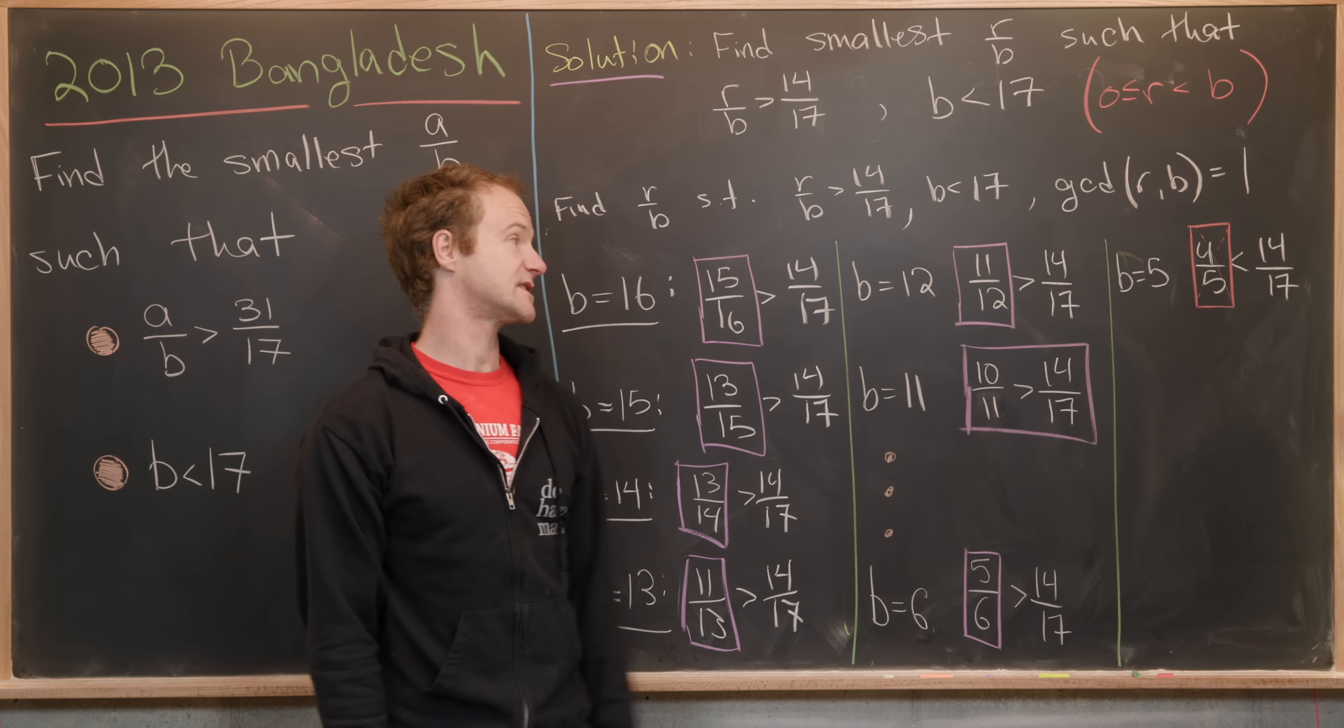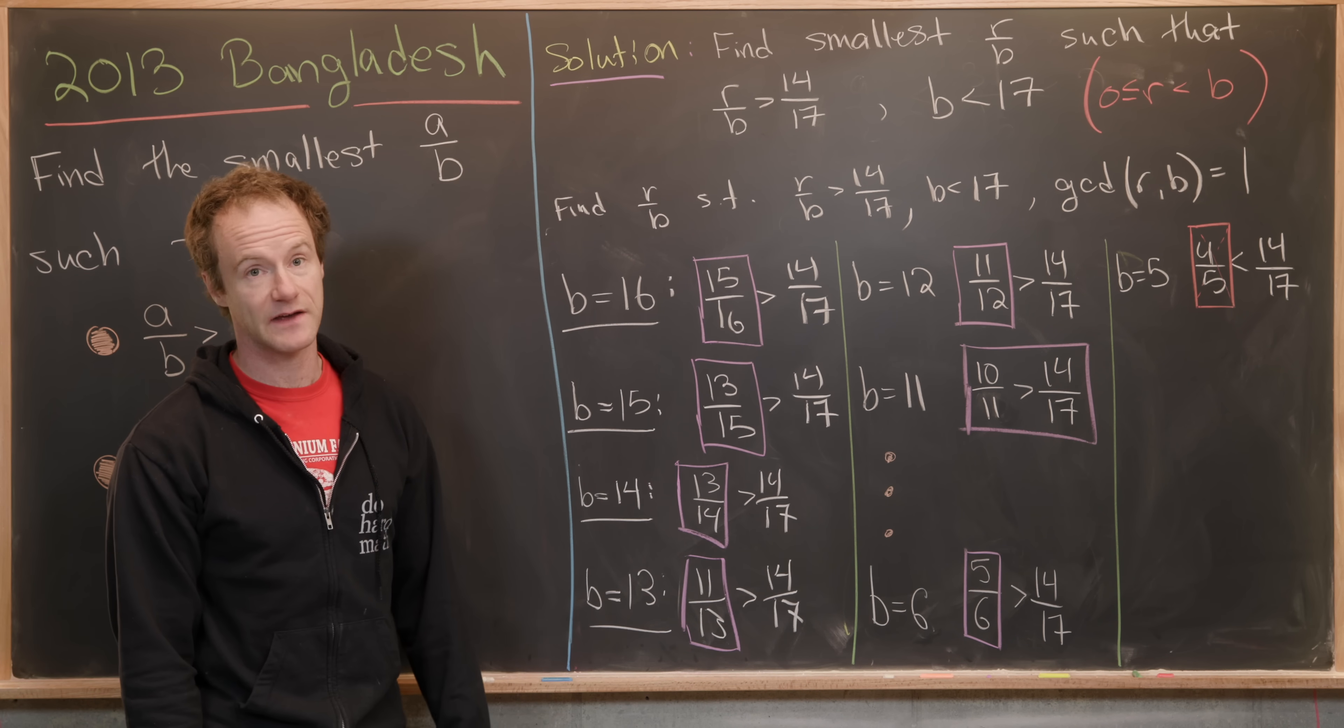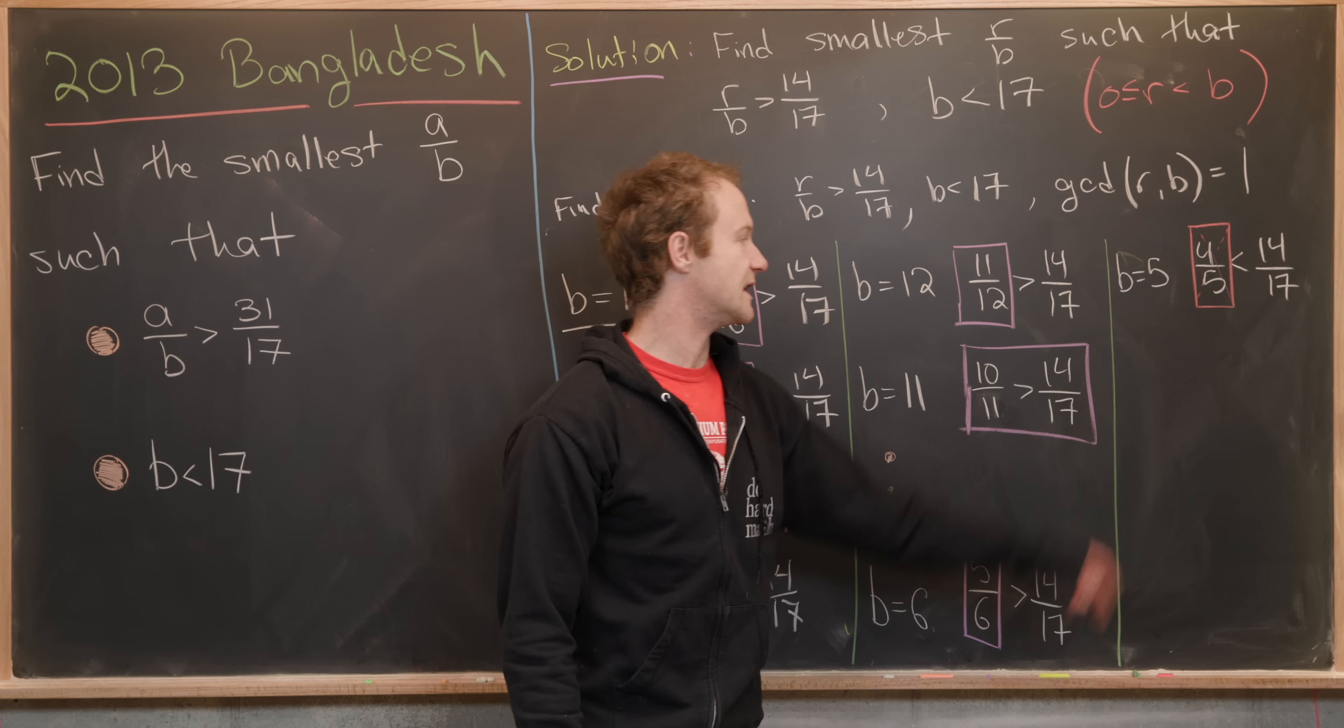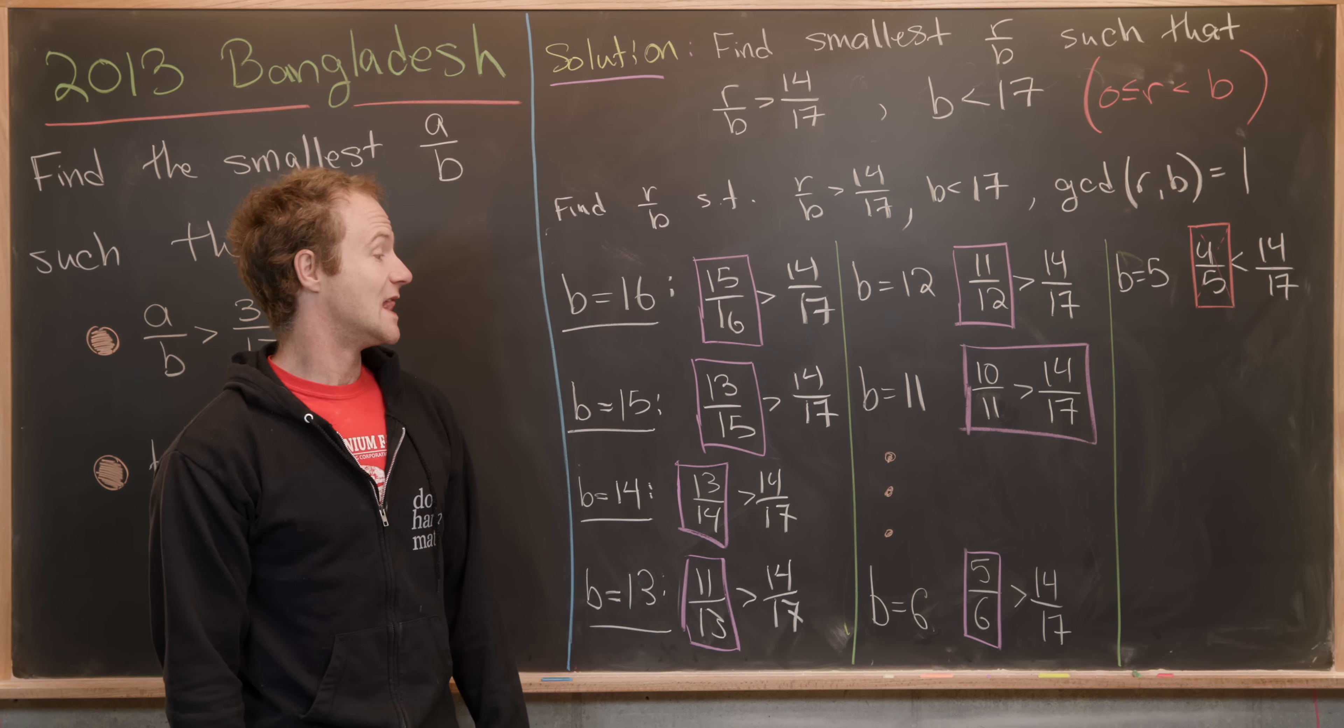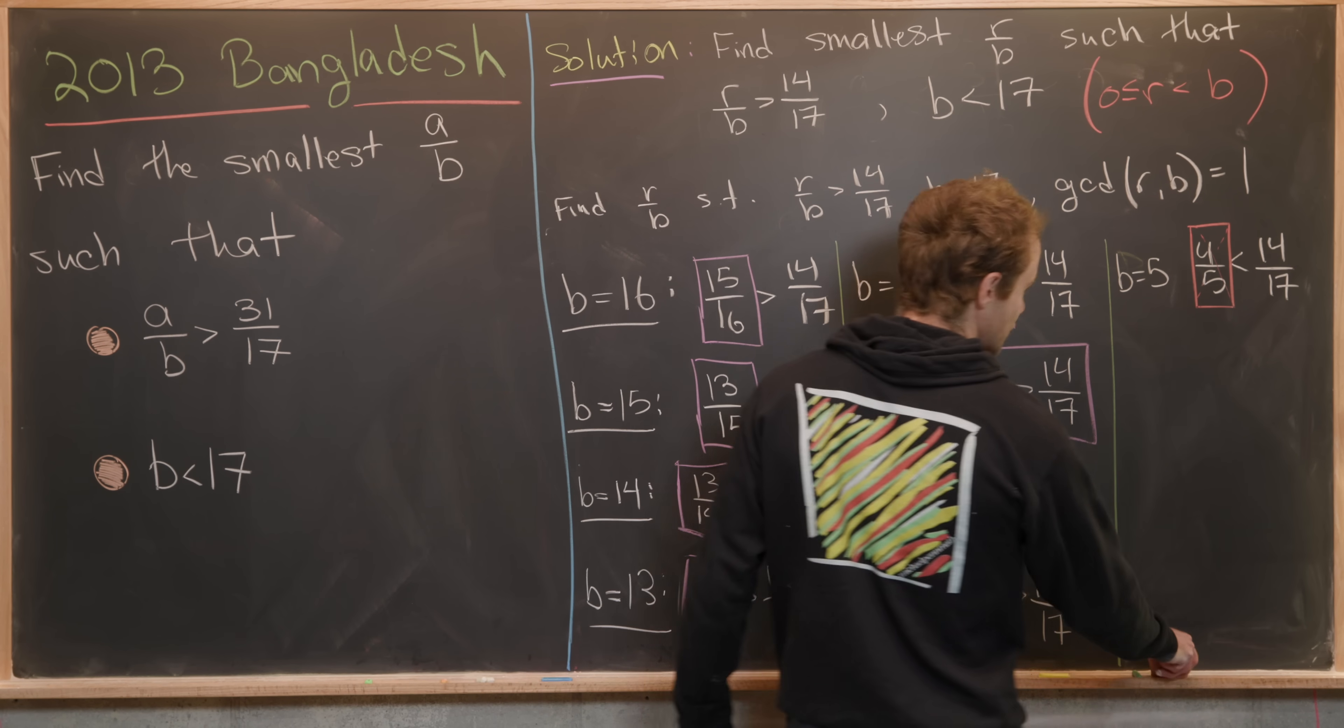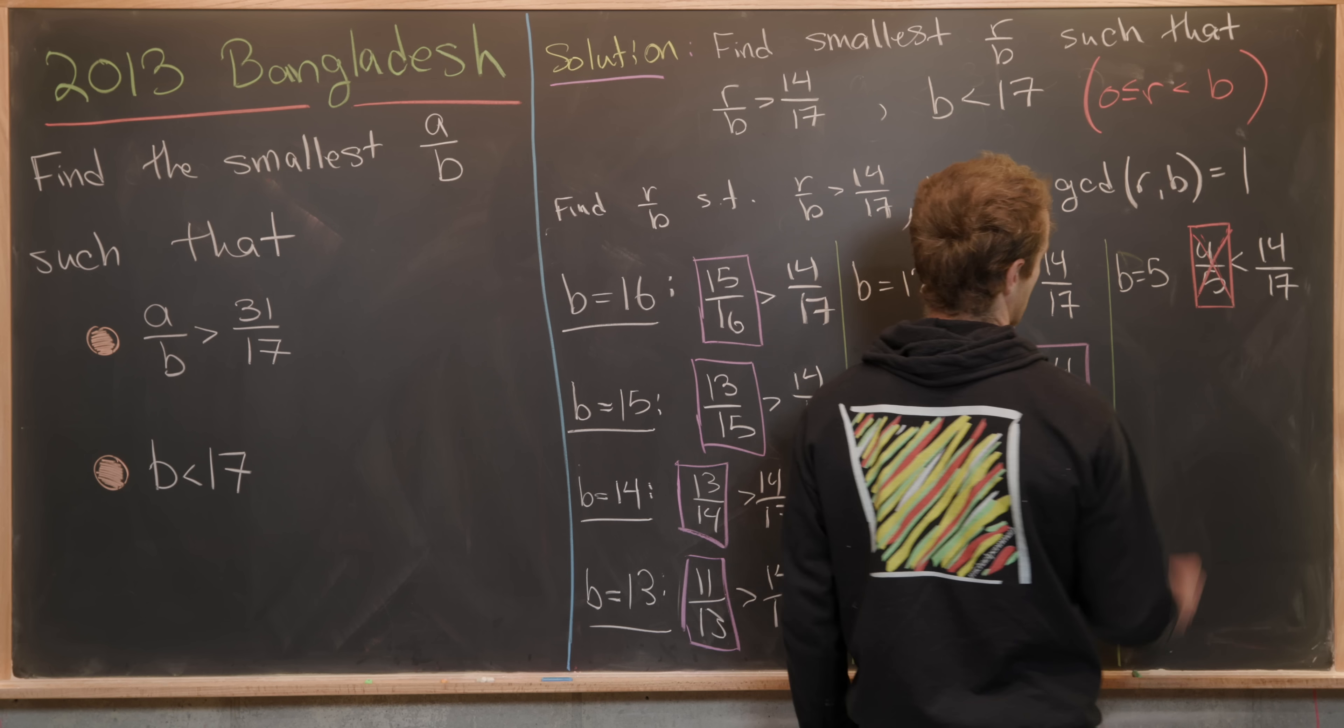Next, we move to the next smallest denominator, which is five. We see that for the denominator of five, four over five is less than 14 over 17. So this will not work.